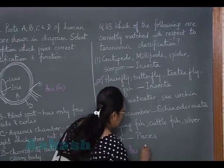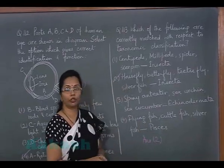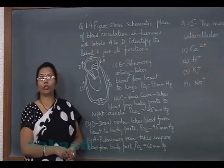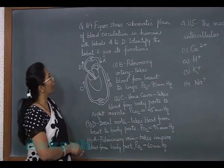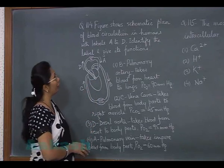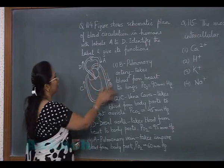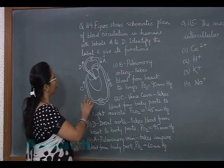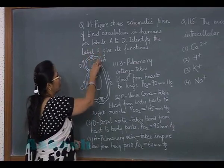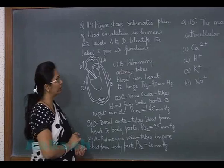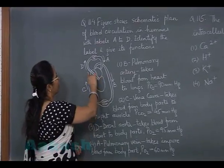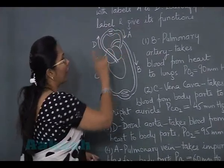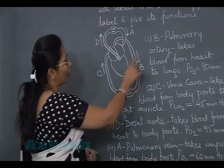Taking up question 114. This is a schematic plan of blood circulation in humans with four labels A, B, C, D, and we have to identify the correct label and functions. Here it is pulmonary circulation and on the other side it is systemic circulation. The blood vessel coming out from the heart and going into the lungs is the pulmonary artery, and coming back to the heart is the pulmonary vein.